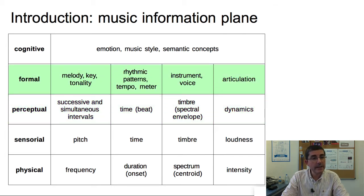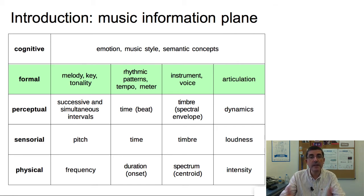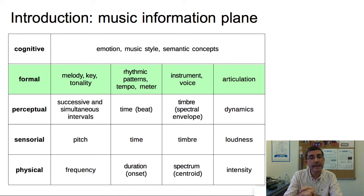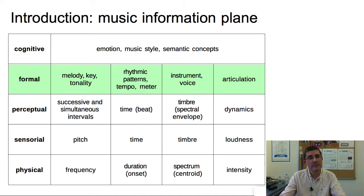We can still go a level higher, towards a more formalized way of talking about musical concepts. When we talk about pitch-related concepts, we talk about things like melody, key, or tonality. For timing-related concepts, we talk about rhythmic patterns, tempo, and meter. When we talk about spectral timbre characteristics, we identify musical instruments or the voice as entities that have a characteristic timbre. And then when we talk about dynamics or loudness, we are interested in the articulations of sounds and how sounds change from one to another.